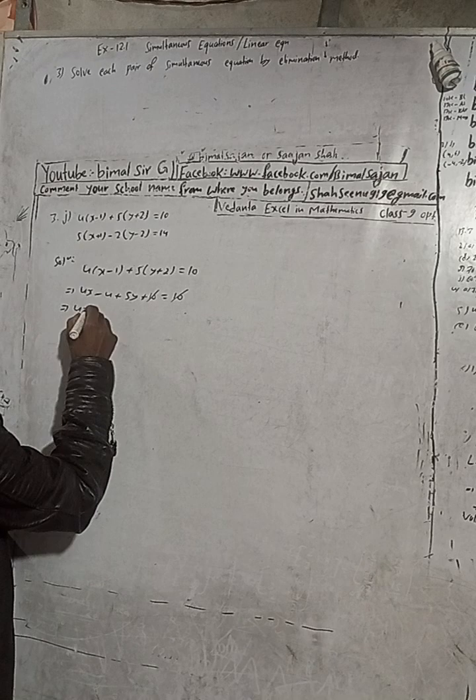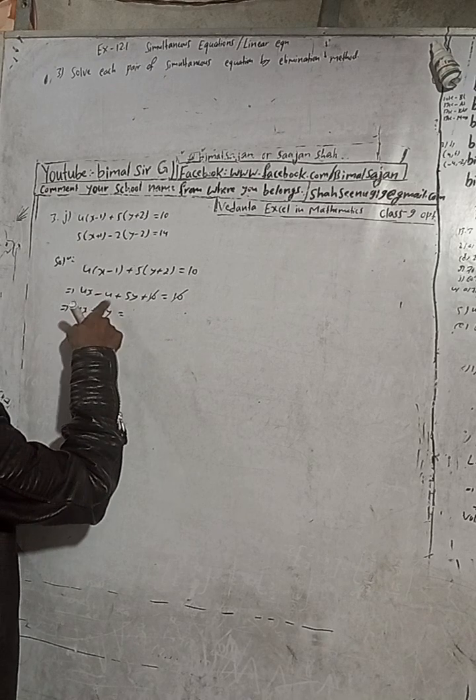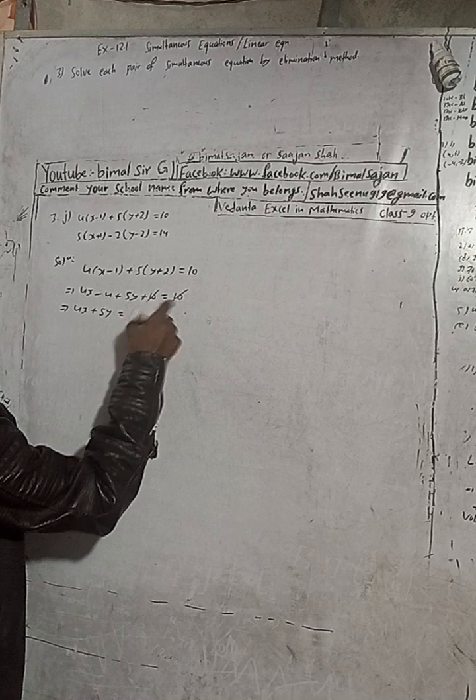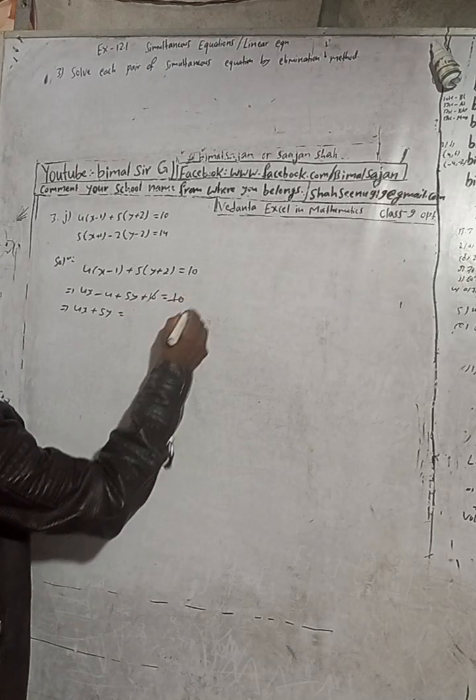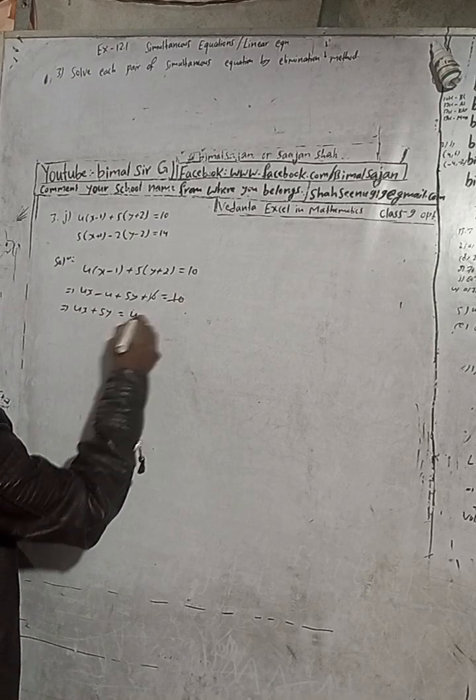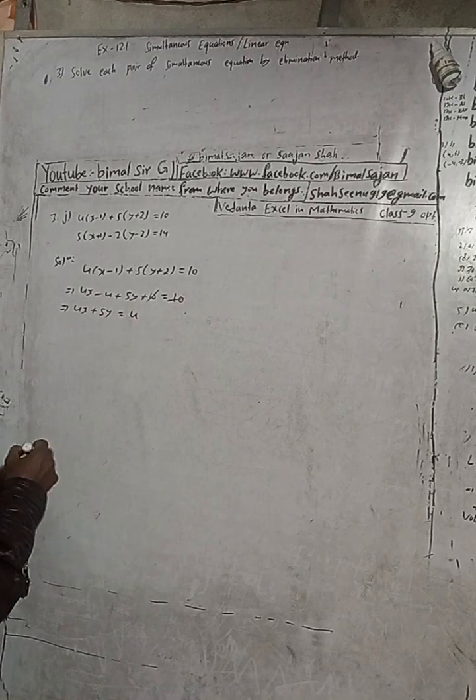Now you can see here, this is 4x and this is plus 5y is equal to... this minus 4 will go that side, will be plus 4. Okay, I have cancelled this 10. This minus 4 that side will be plus 4.